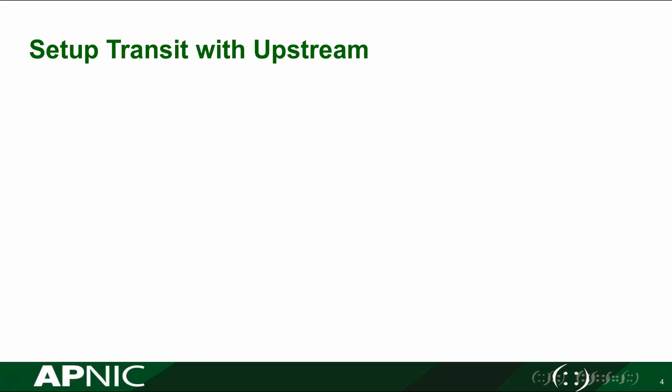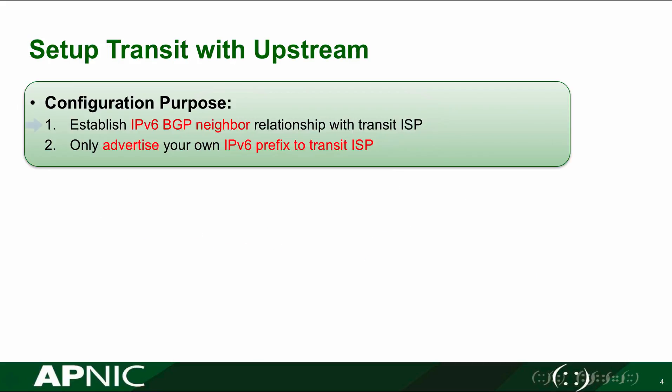When you set up the transit, what are the purposes of configuration? Number one, we need to establish an IPv6 BGP neighbor relationship from transit routers to our network. Number two, we advertise only our IPv6 prefix — the aggregated one that we got from the registry, for example from APNIC.